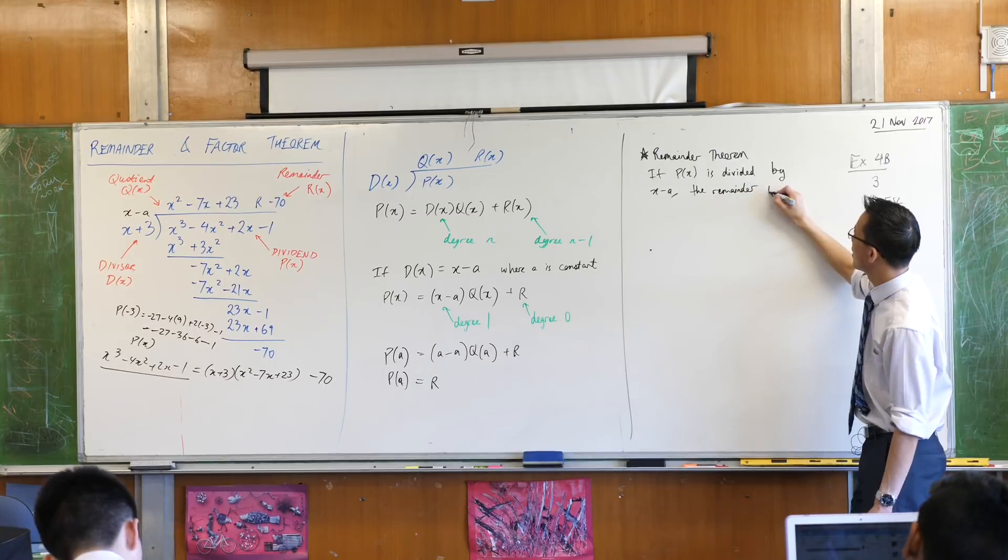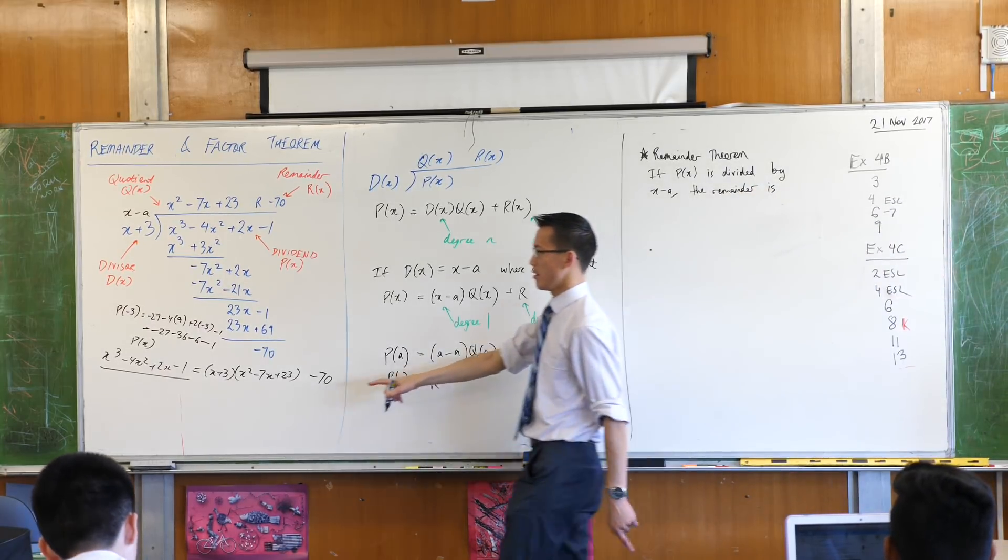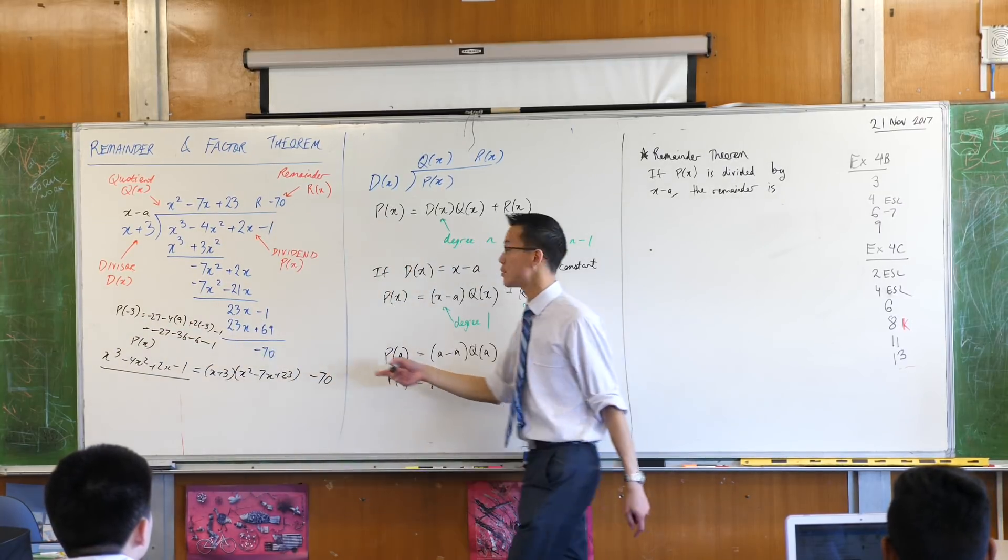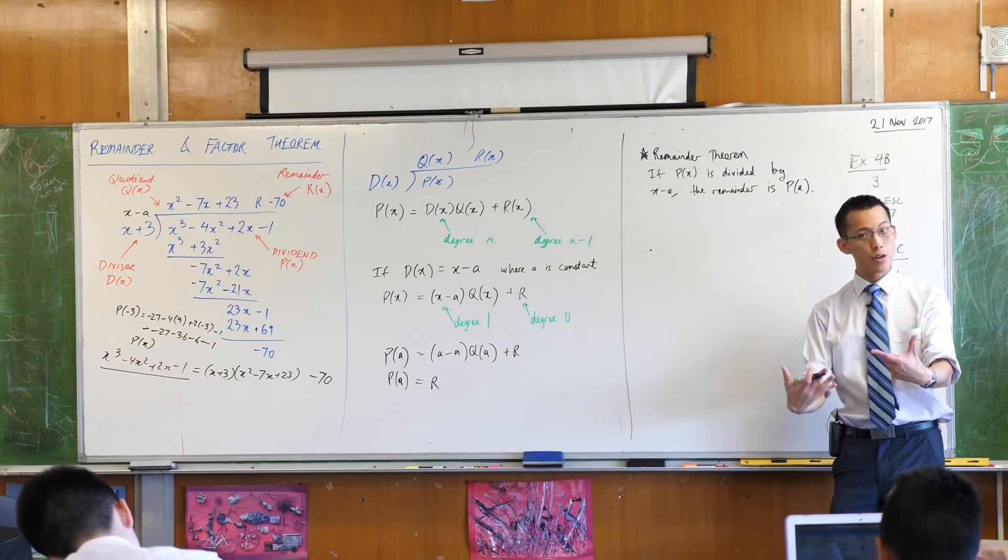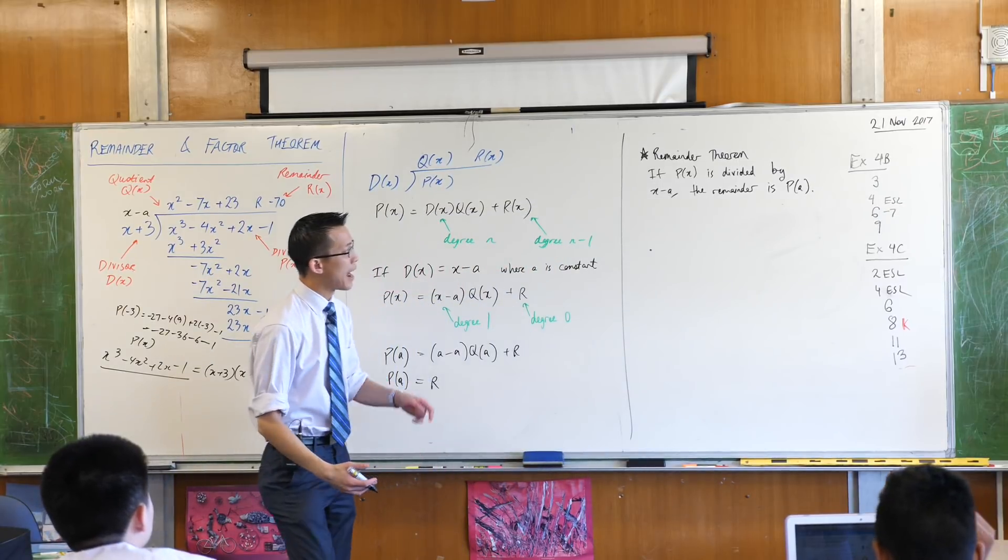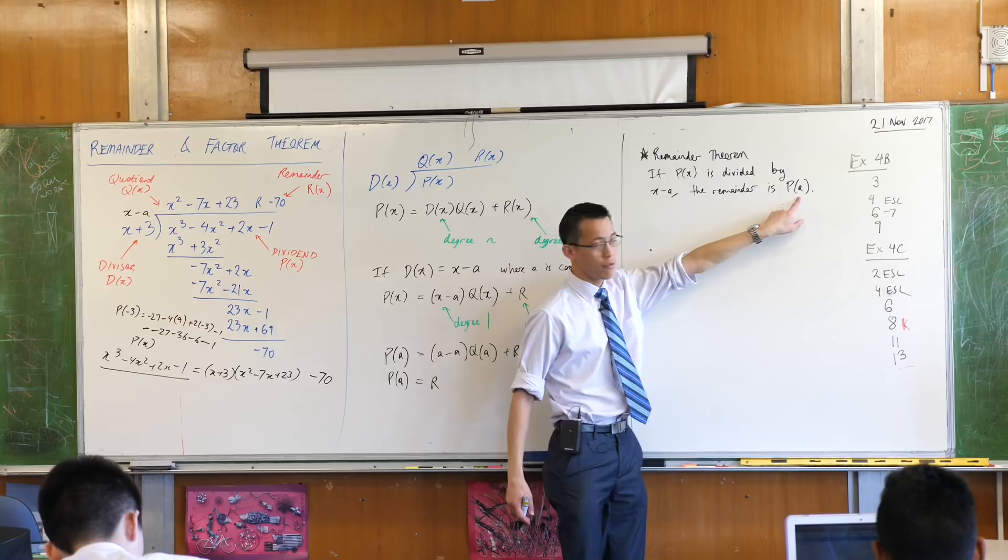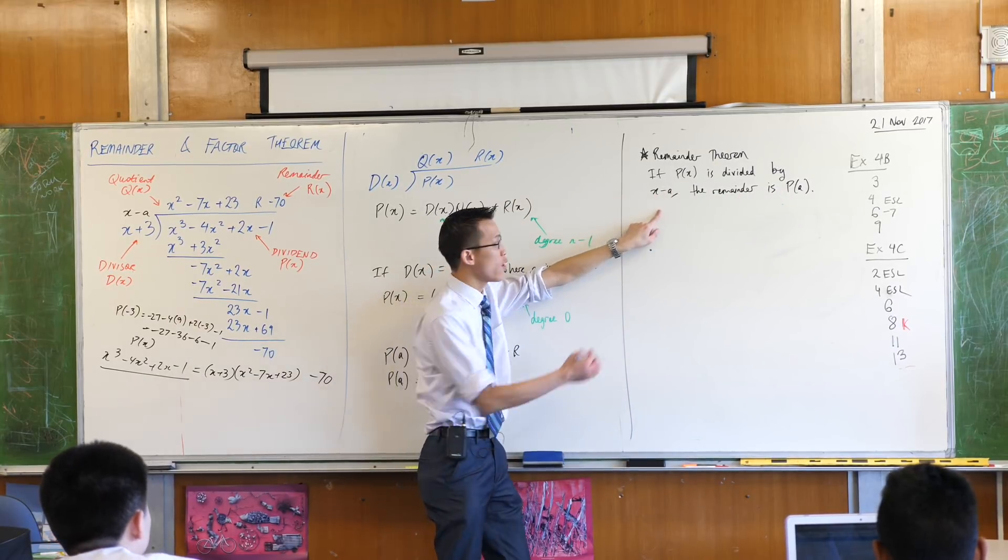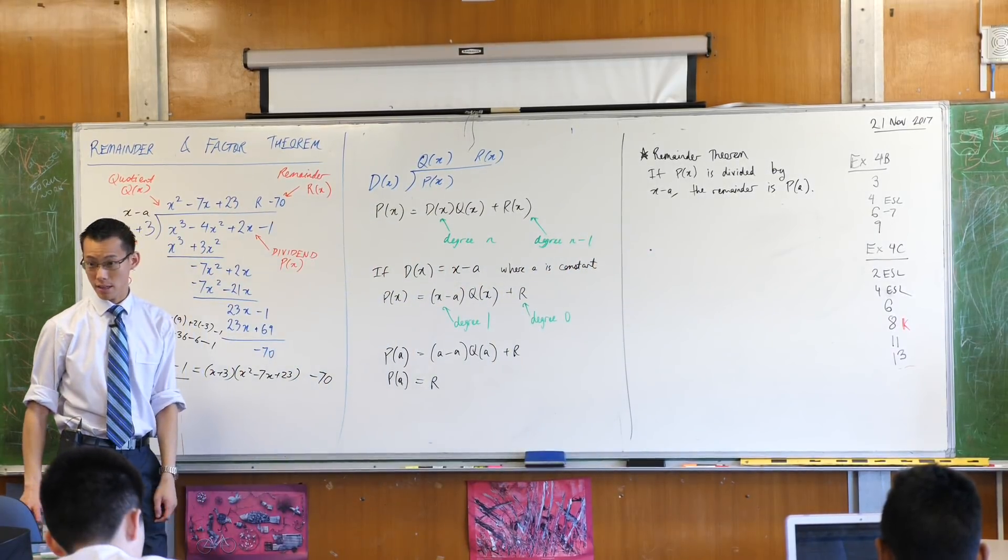The remainder is, what's it equal to? Have a look, how do I find it? It's P(a), whatever that happens to be. By the way, using the language that we already know, I can say it's P of the zero of the divisor. Do you see that a is the zero of this polynomial here? You put in a, poof, it's gone. So that's the remainder theorem.